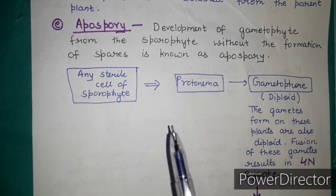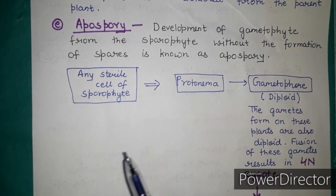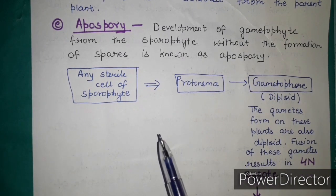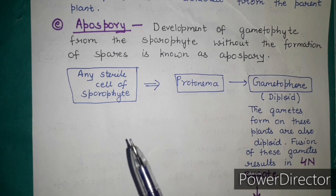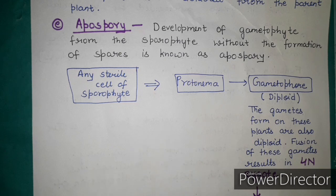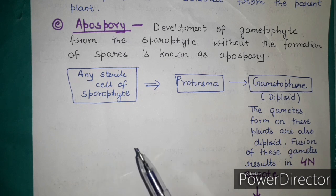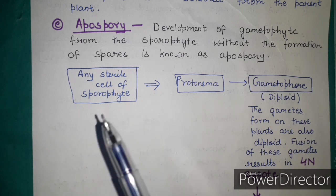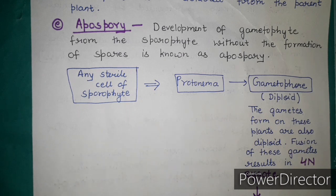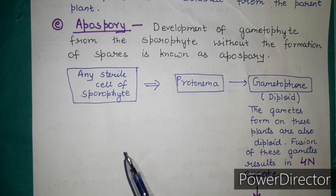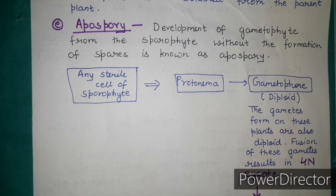So in Funeria, there are different methods of vegetative reproduction: fragmentation of the primary protonema, secondary protonema formation, gemmae, bulbils, and apospory. These are the five methods of vegetative reproduction in the case of Funeria.